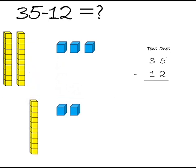Now count all ones blocks. Here 3 blocks left with us. So 5 ones minus 2 ones is equal to 3 ones. Count 10 rods. We have 2 rods left with us. So 3 tens minus 1 tens is equal to 2 tens.